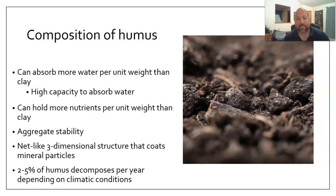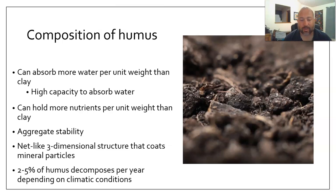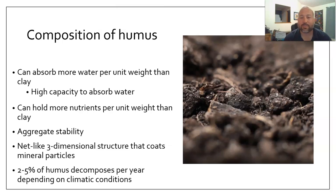More about the composition of humus. It can absorb more water per unit weight than clay — a really high capacity to absorb water, which is fantastic for soils. It can hold more nutrients per unit than clay, also extremely important. In terms of aggregate stability, it helps form aggregates and provide stability in the soil. It's got a net-like three-dimensional structure that coats the mineral particles. About 2% to 5% of the humus decomposes per year, depending on your climatic conditions. Moist and cool climates decompose a lot faster; hot and dry, not as much.